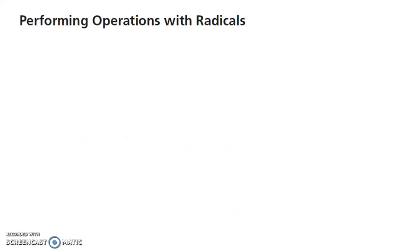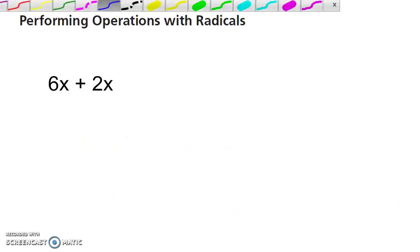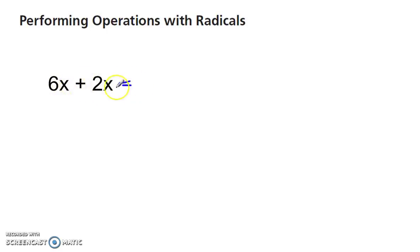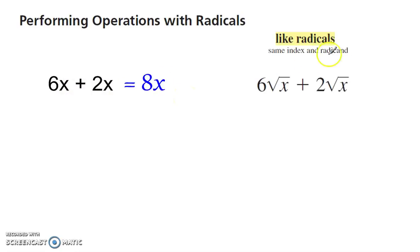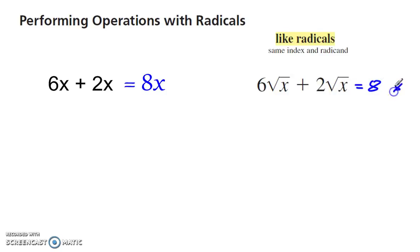Performing operations with radicals: radicals act a lot like variables. If you have like terms like 6x plus 2x, since they have the same variable they are like terms and we can add them to get 8x. In the same way, you can add like radicals — same index and same radicand. So 6 radical x plus 2 radical x is 8 radical x.